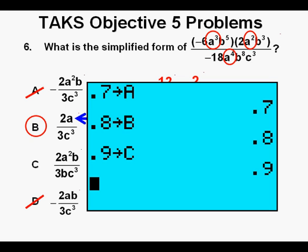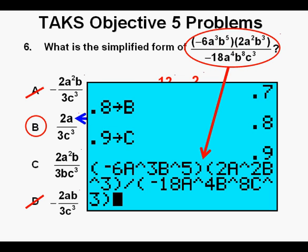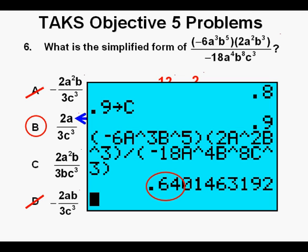We can go to our calculator again. I've stored 0.7 for a, 0.8 for b, and 0.9 for c. Then we enter the original expression, being sure to place both the numerator and the denominator in parentheses. Press Enter. We get approximately 0.64.